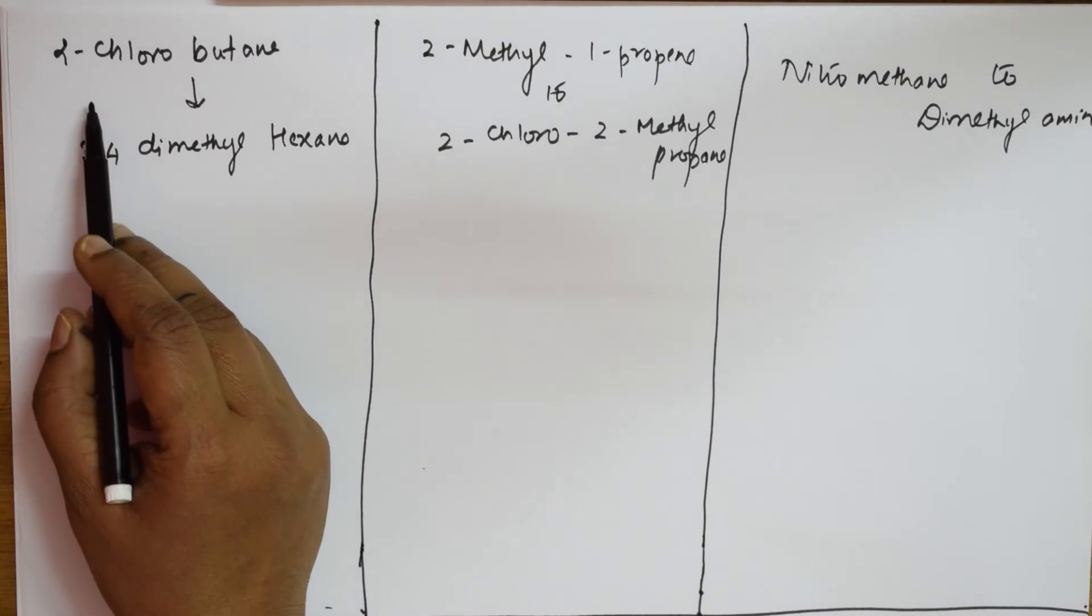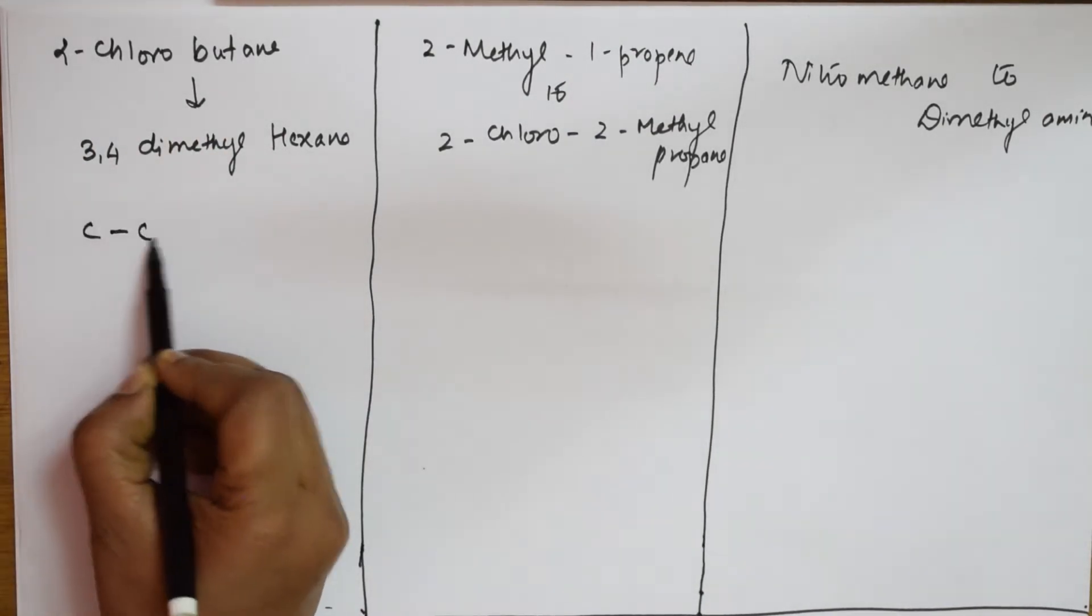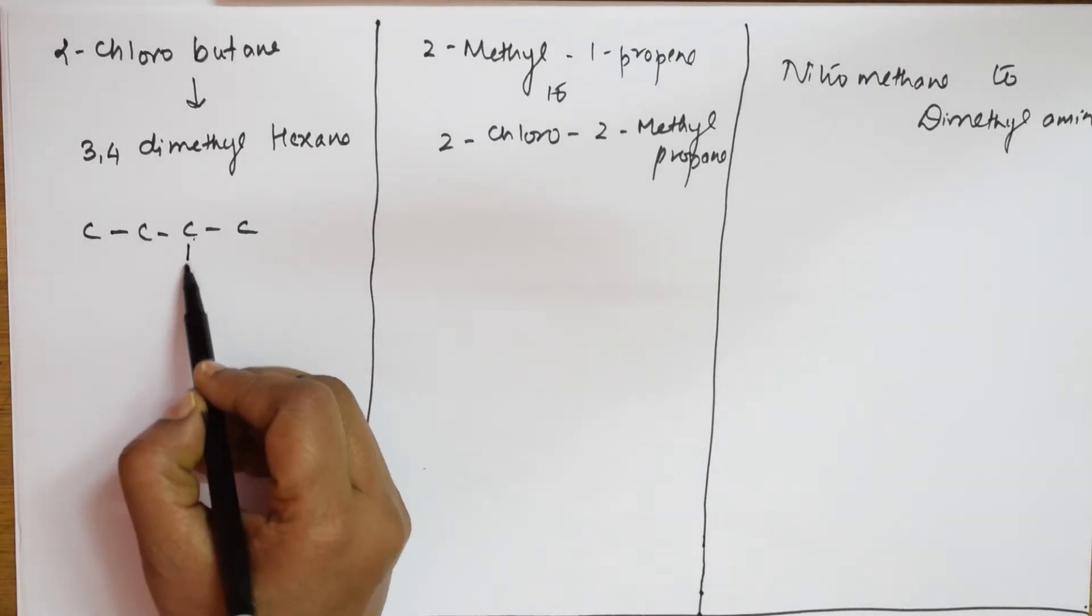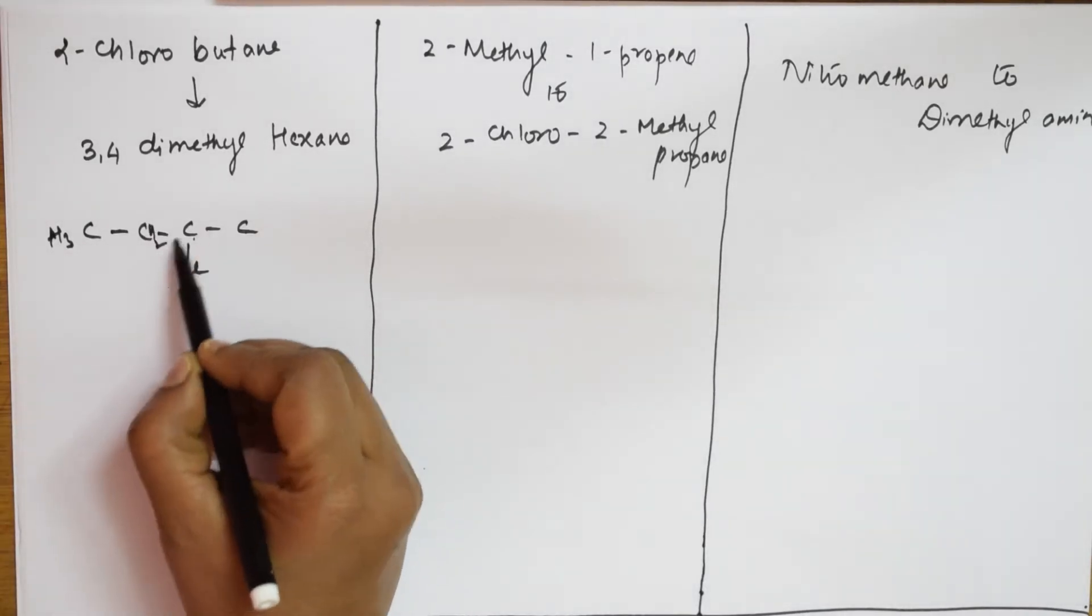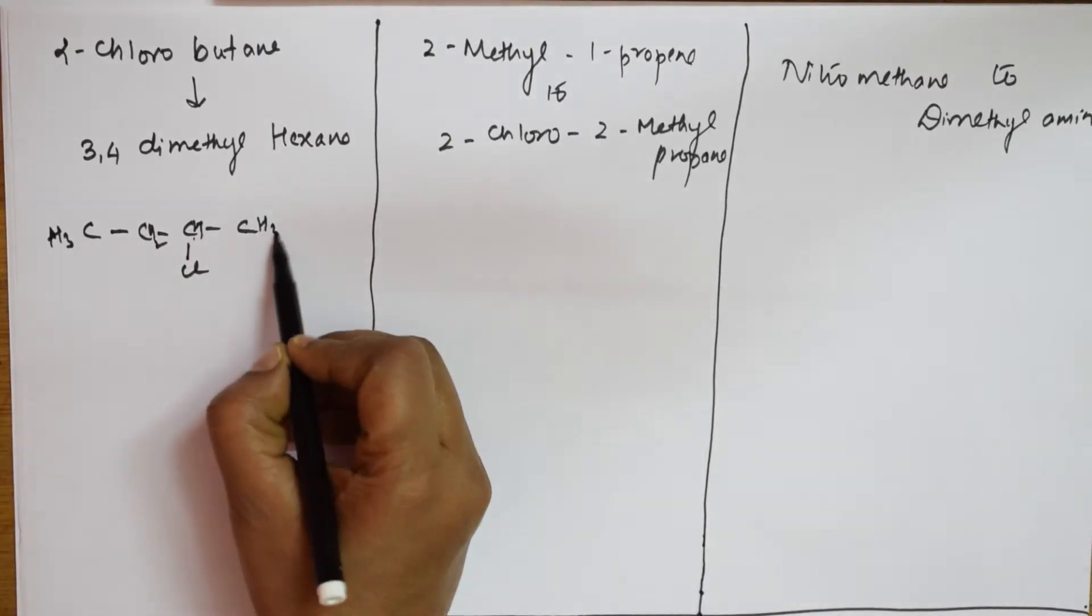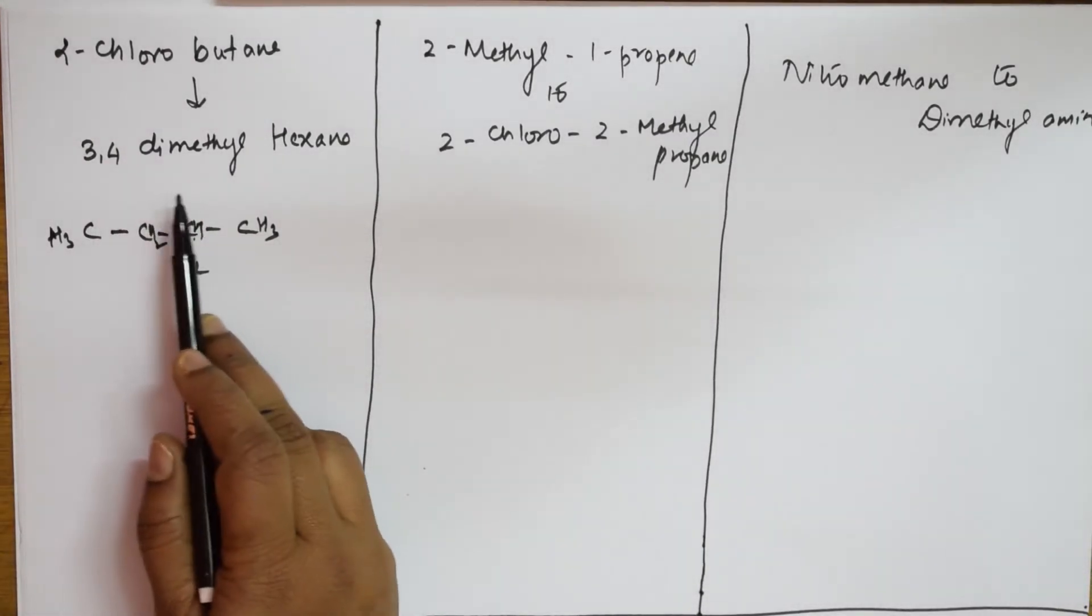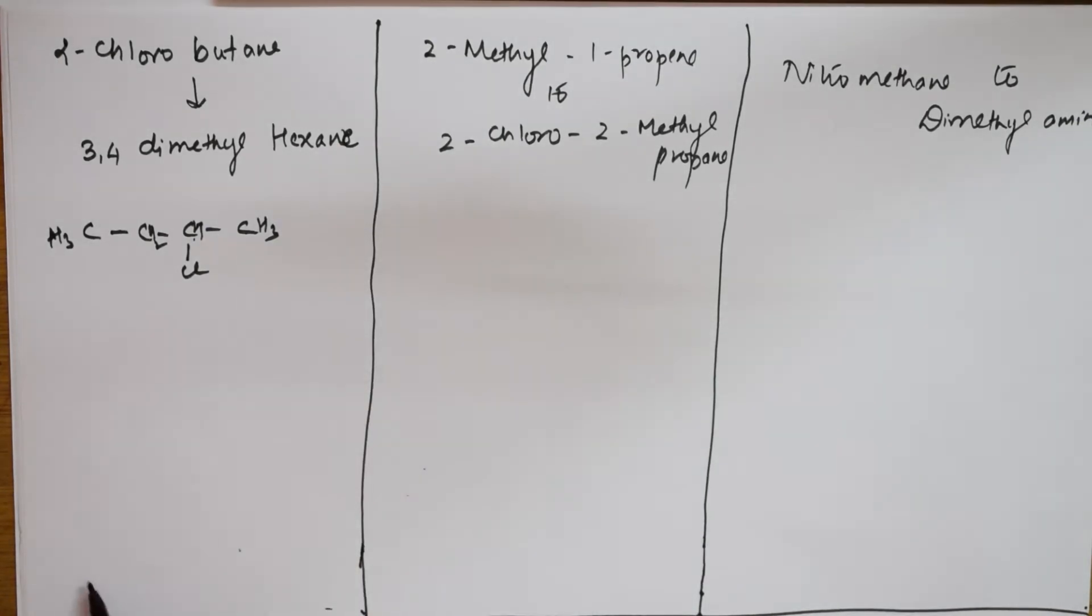They've given me 2-chlorobutane. Butane is a four-carbon chain: one, two, three, four. If I start from here, one and two - this is chloro, this is CH3-CH2, this is hydrogen, this is CH3. I need to convert 2-chlorobutane to 3,4-dimethyl hexane.